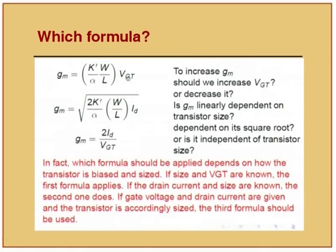When teaching this in class, it must register in the minds of students, because students often try to just stuff a formula with values without understanding. Essentially what is happening is: as I increase VGT, something else changes because of the current. For example, if I decrease VGT, the current will decrease by VGT squared, and GM will actually decrease at that point if current is a dependent variable.